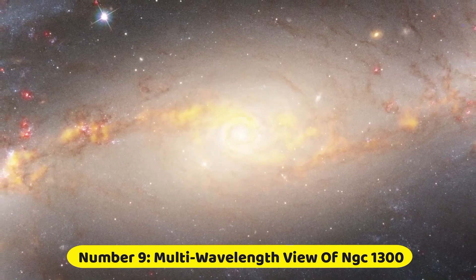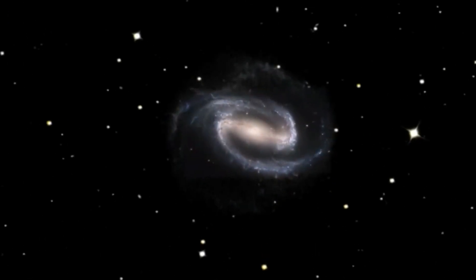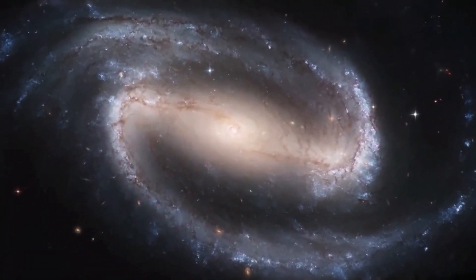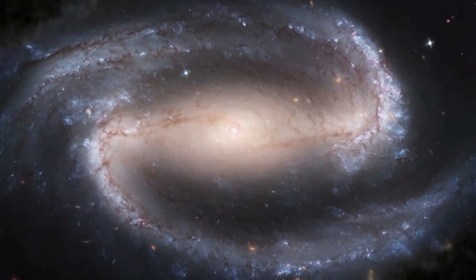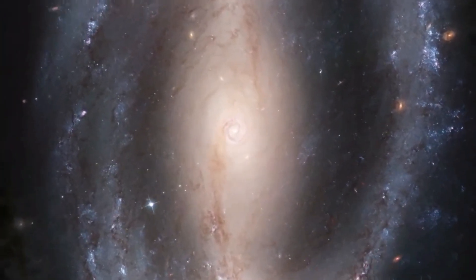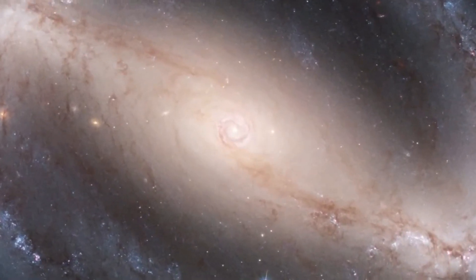Number 9. Multi-wavelength view of NGC 1300. This image of the spiral galaxy NGC 1300 combines multiple observations to showcase its star populations and gas. The image highlights the frigid molecular gas clouds that serve as the birthplace of stars, visible in yellow through radio light.